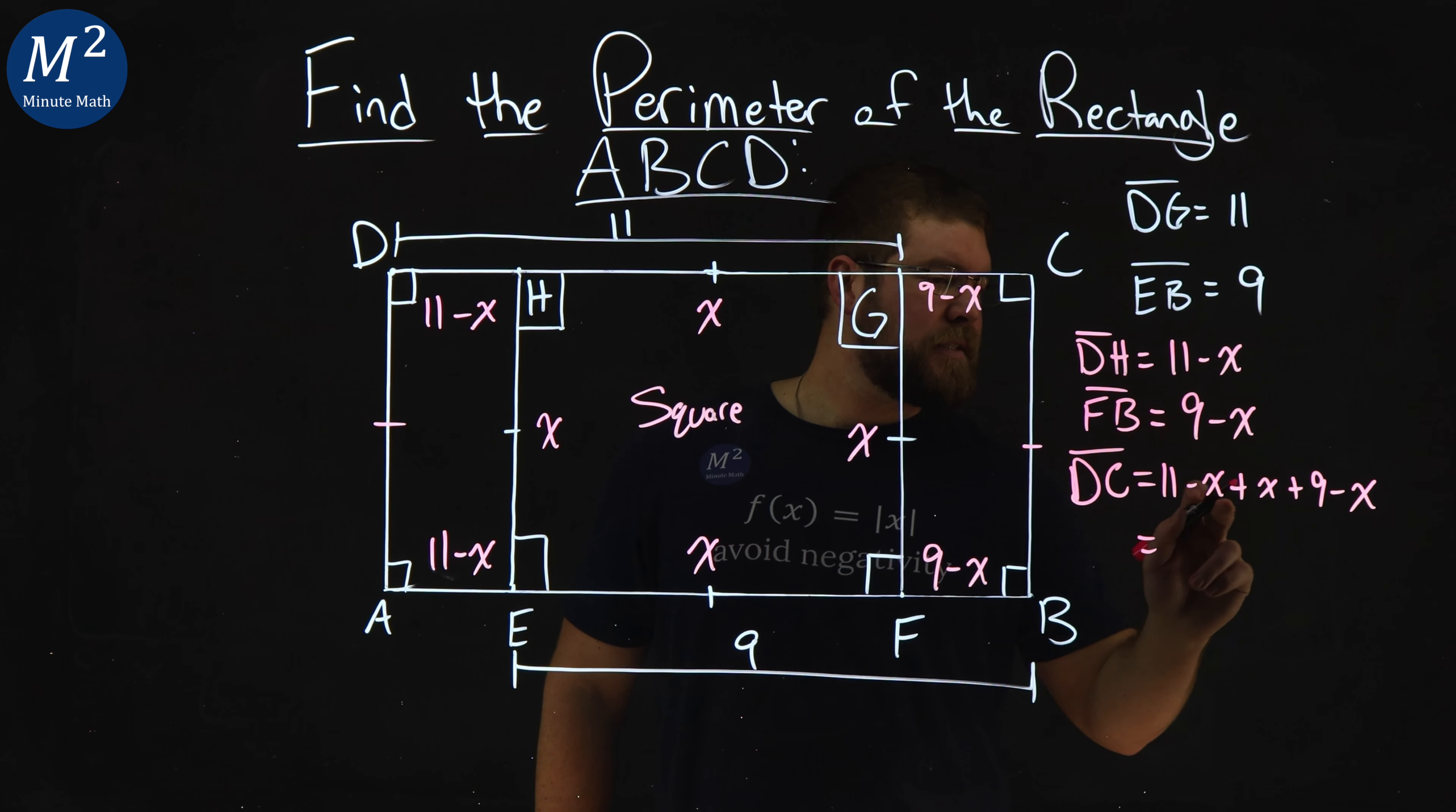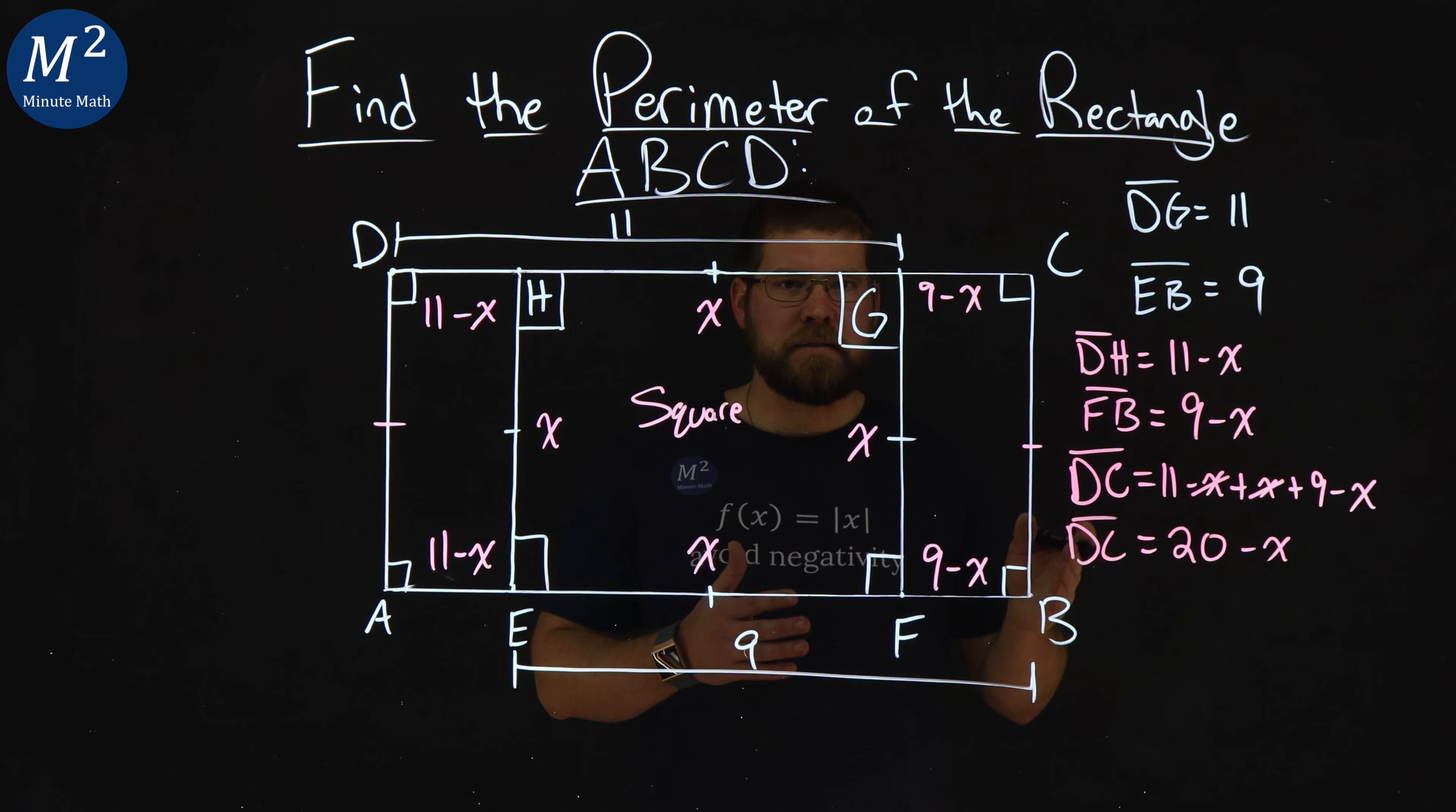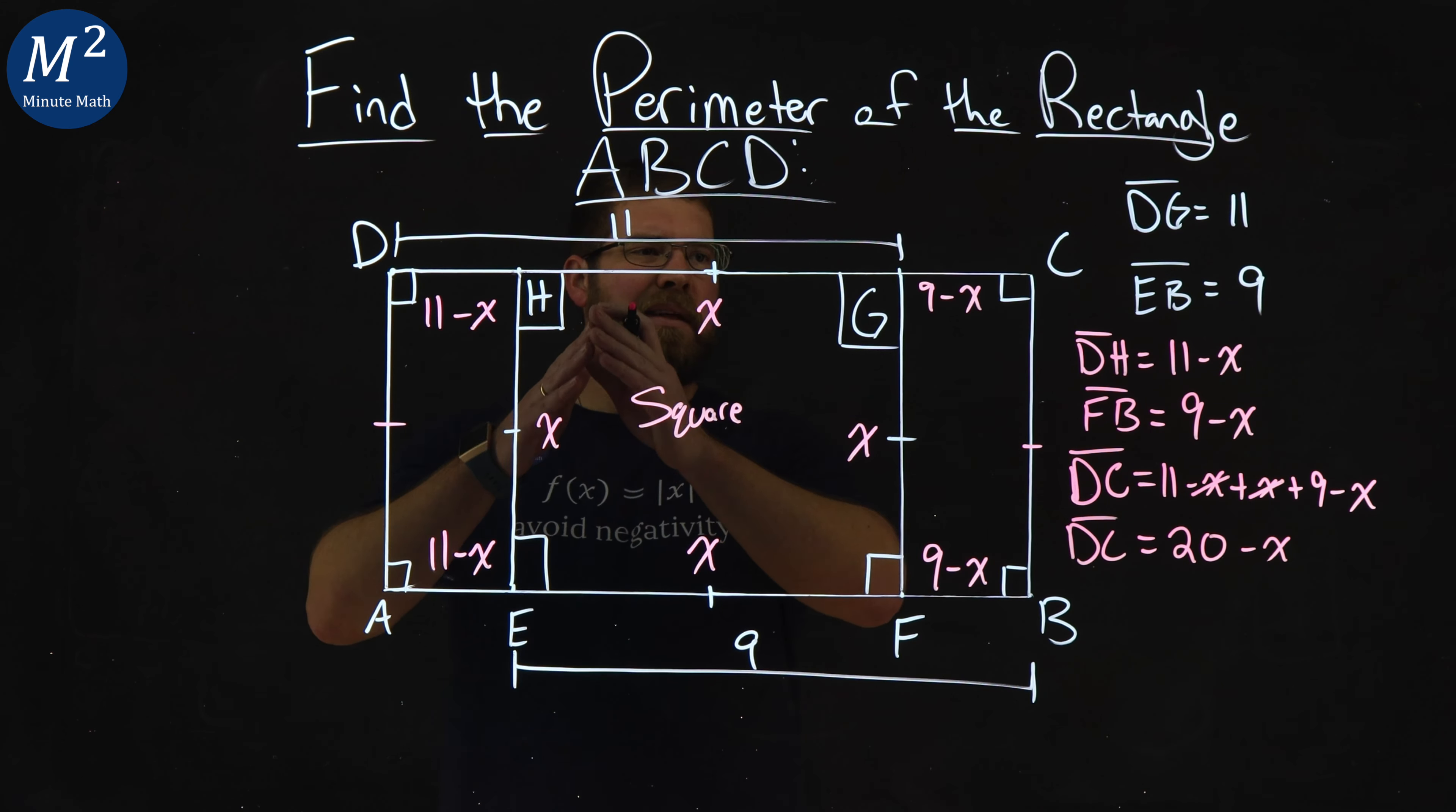DC, the X, and minus X and X cancel. Boom, boom. We have 11 plus 9, which is 20, and minus the X. So, length of DC is equal to 20 minus X. That's like, well, the length.